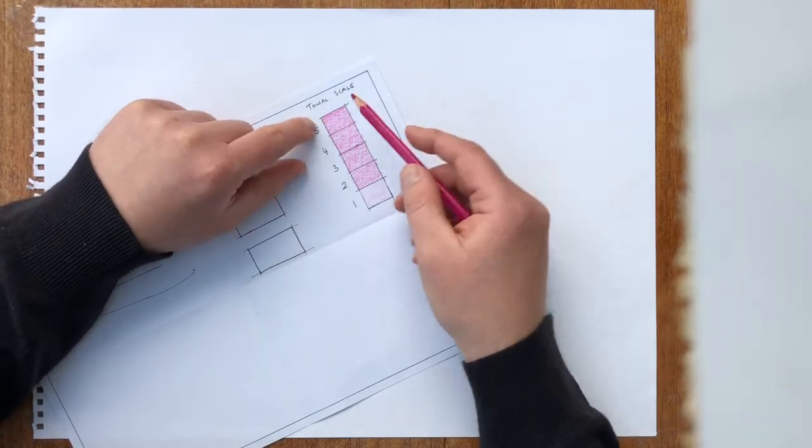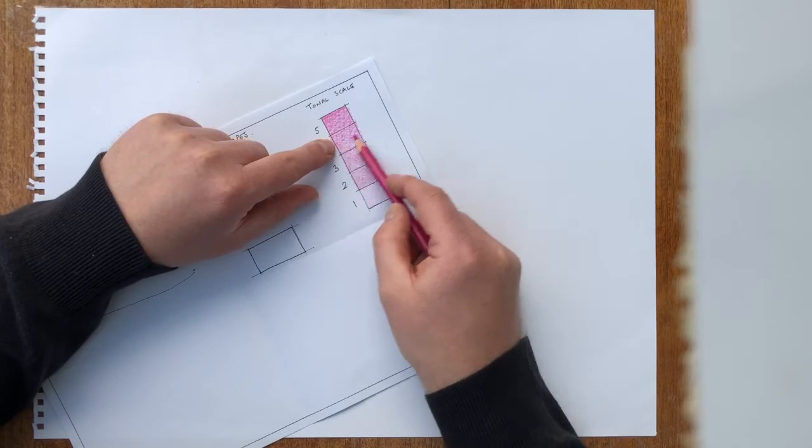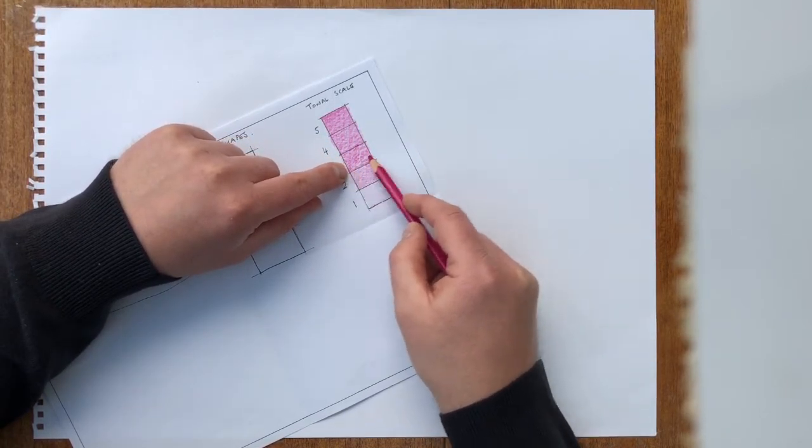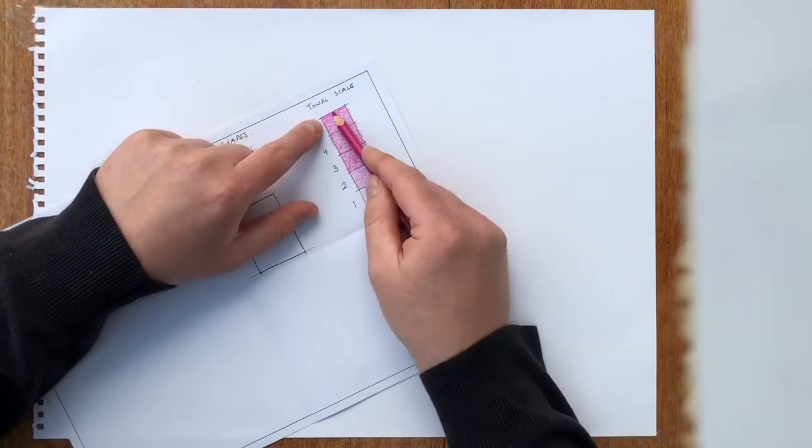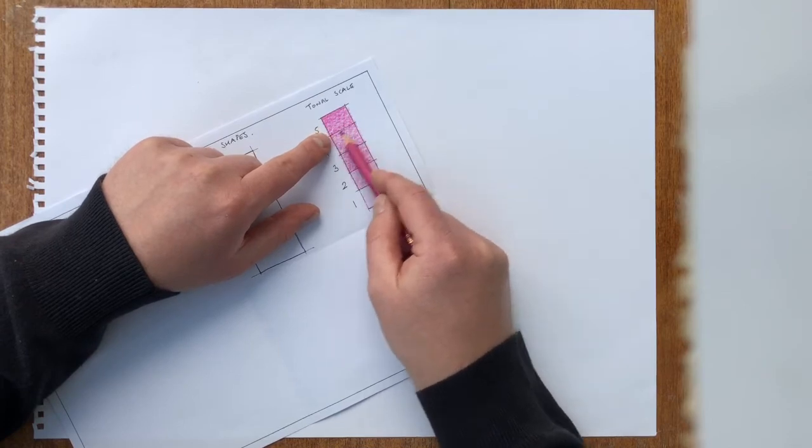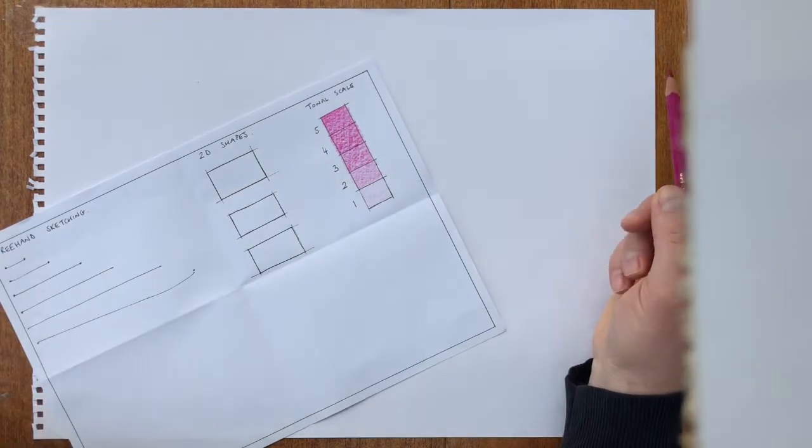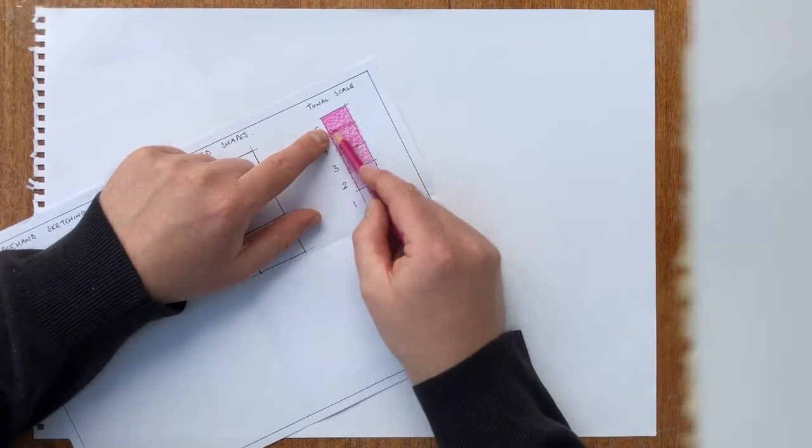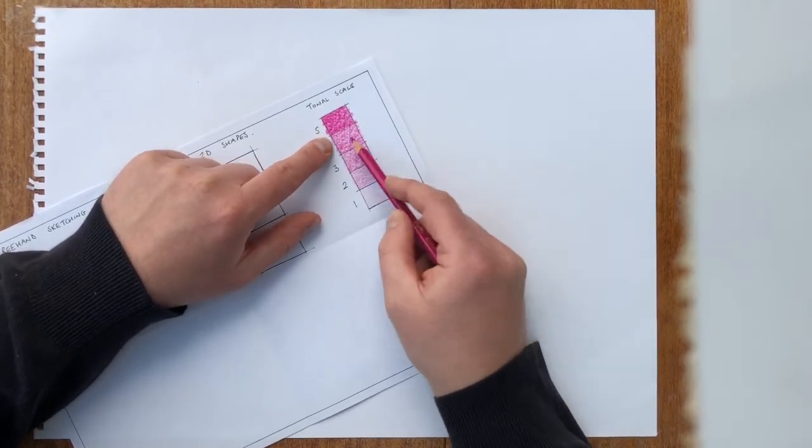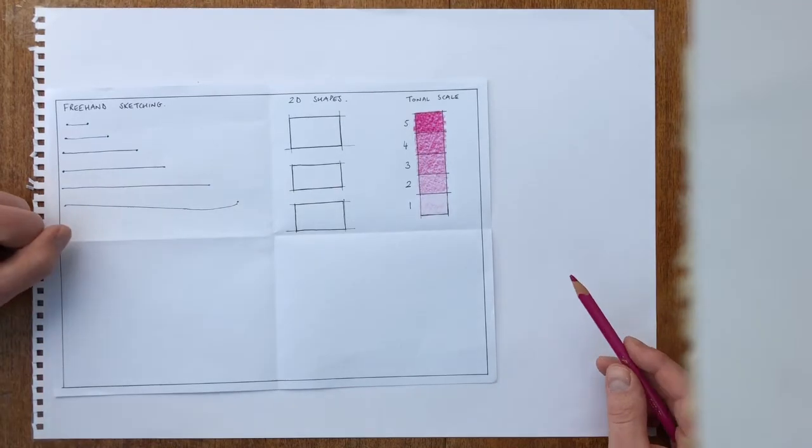I'm then going to do 5, 4 and 3 this time. Again, what it's going to do is make 5, 4 and 3 slightly darker. Again, 5 and 4. And finally, number 5 on its own. And what I'm going to do is just make sure that we've got 5 different tones. If you squint your eyes, you should see 5 different tones there.